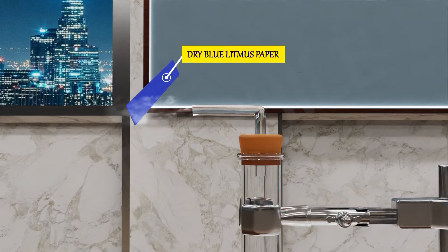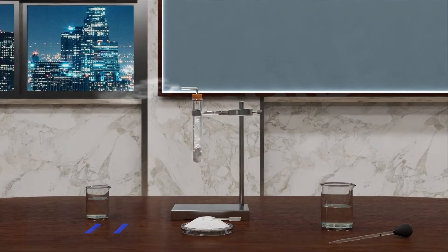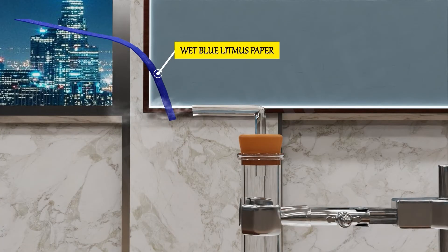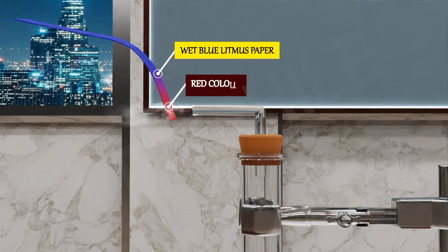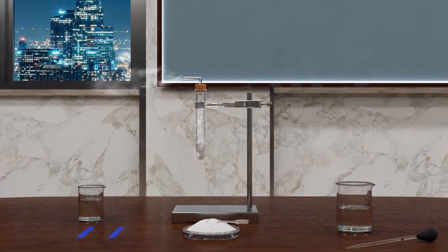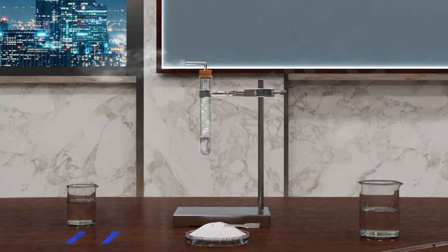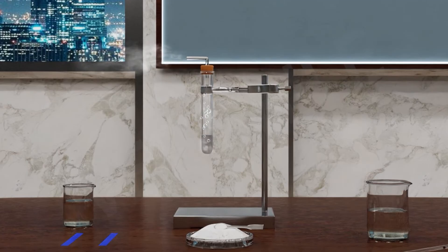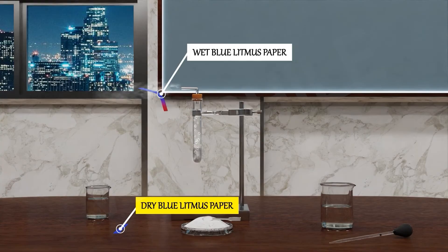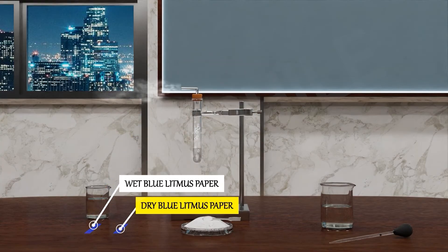That's why the wet blue litmus paper's color changes, but the dry one doesn't change.